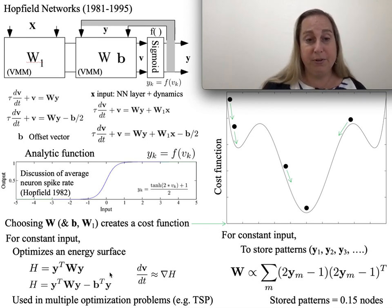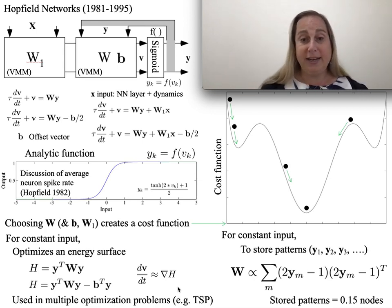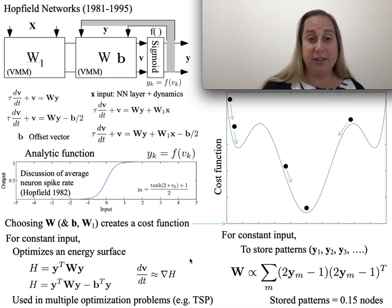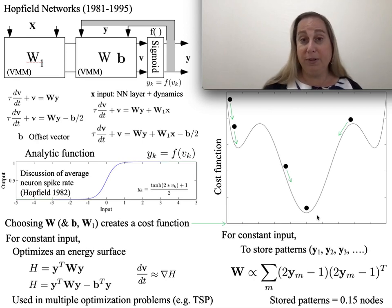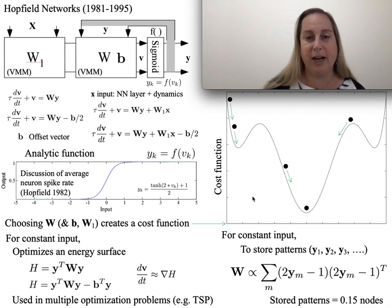Another thing that shows up is I can create energy surfaces directly, and sometimes those could be the result of an optimization problem. That allows me to set this up as an optimization problem where I could find a global minimum. For example, traveling salesman problem is a classic one that Hopfield talked about in 1985. This gives you this interesting dynamic and begins to make clear what we talk about with optimization and cost functions.